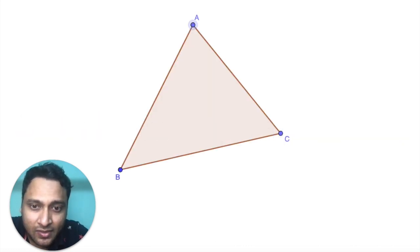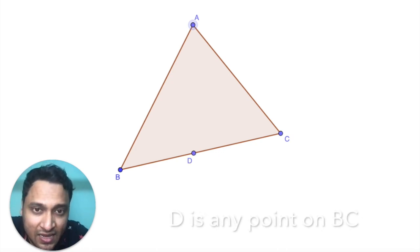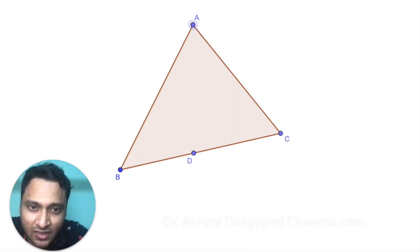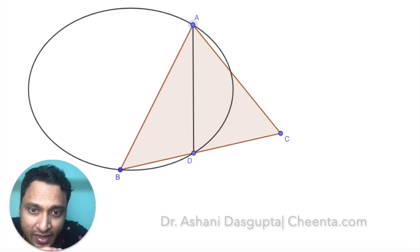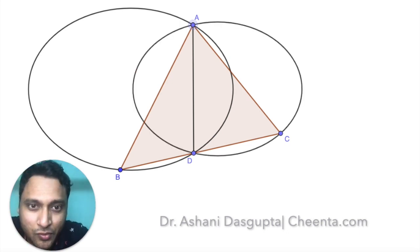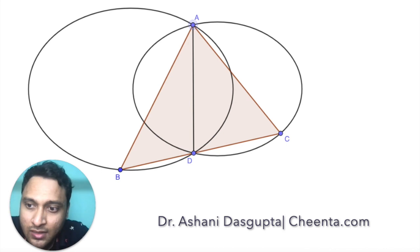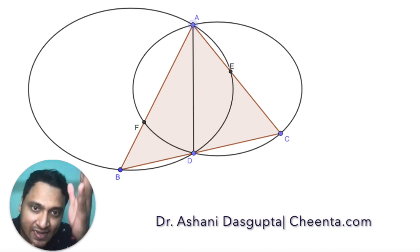I'll draw three points A, B, C and the triangle ABC. Let's take any point D on the line BC and join AD. We will draw two circles: one through A, B, D and another circle through A, D, C. Now let's mark the points E and F, which are the intersection points of the two circles with AC and BD.